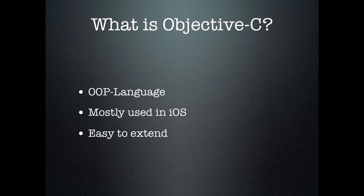What is Objective-C? Well, Objective-C is something called an OOP language. OOP stands for Object Oriented Programming Language. That means that we will be dealing with a lot of something called objects, and we will get into that later in the series.